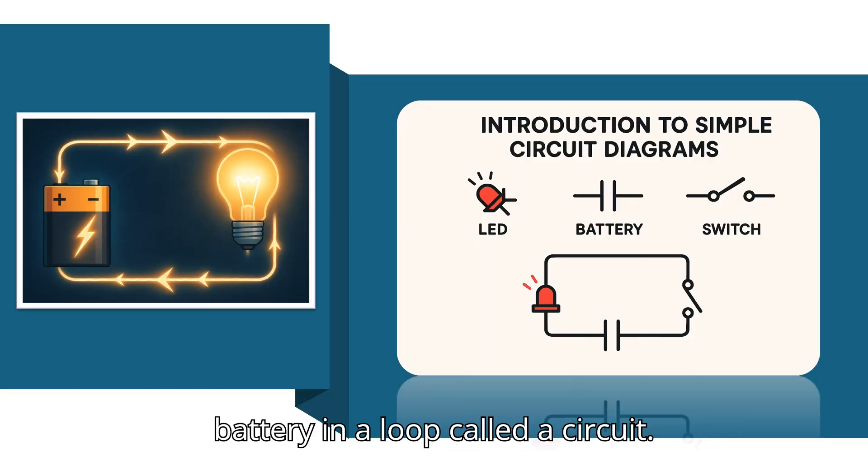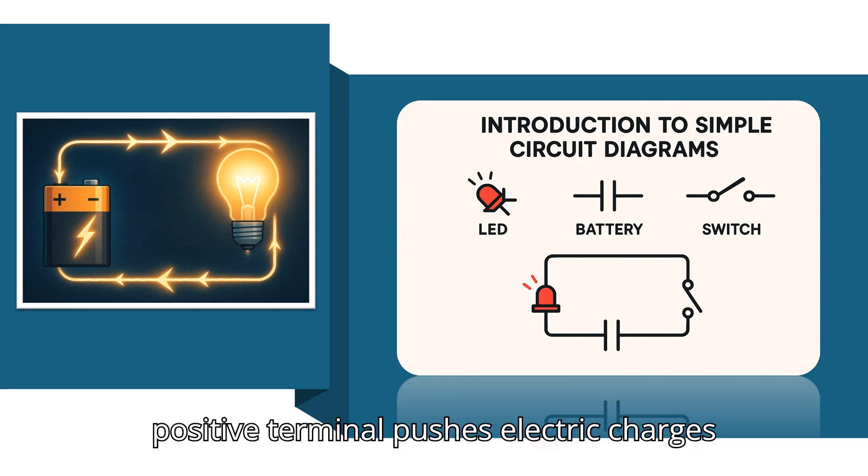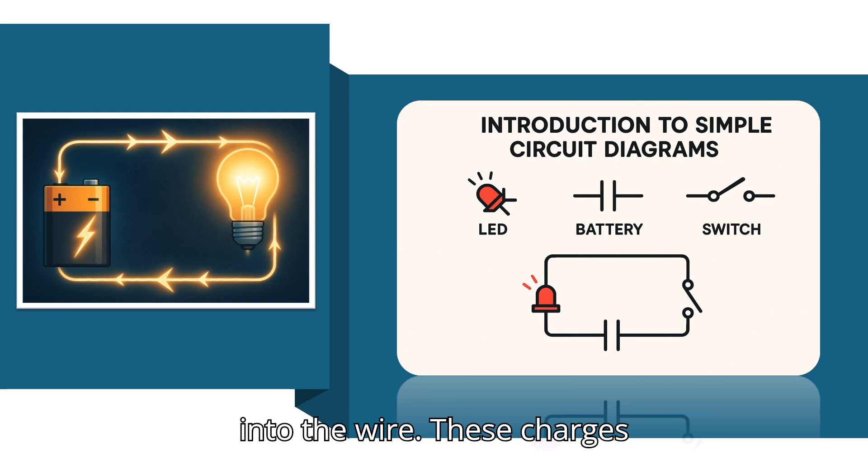Electricity flows from a battery in a loop called a circuit. When the battery is connected, the positive terminal pushes electric charges into the wire. These charges travel through the wire because the battery creates an electric pressure called voltage.